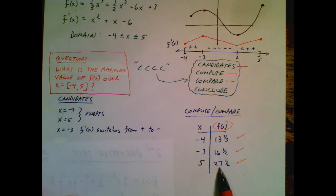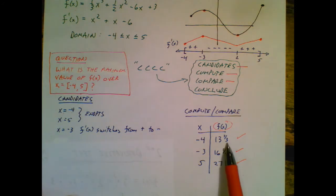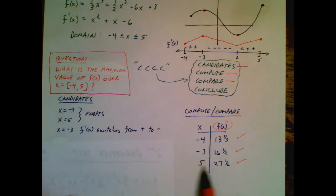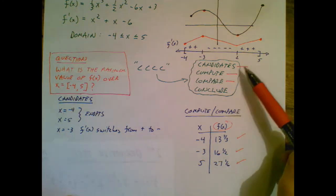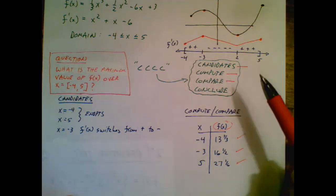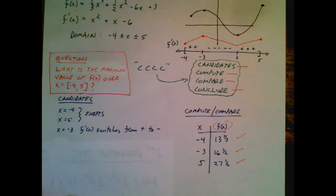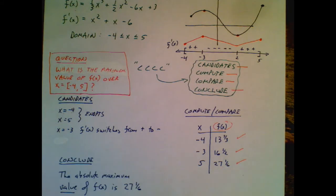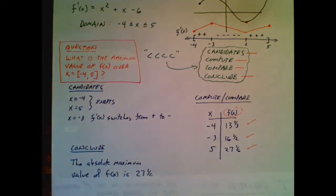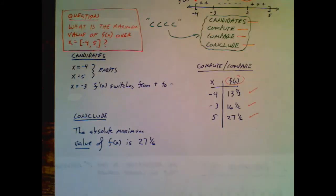In my head, I now know that this is the absolute maximum value. Good try, negative 4. Good try, x equals negative 3. But x equals 5 led to the maximum value for this function. So I looked at my candidates. I computed and I compared their y values. Now I must conclude, which is just writing out my answer. And here we go. The absolute maximum value is 27 and a 6. So I'm done, but I want to show you a trap.